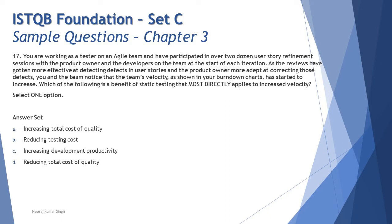Let's take up question number 17. You are working as a tester on an agile team and have participated in over two dozen user story refinement sessions with the product owner and the developers at the start of each iteration. The reviews have gotten more effective at detecting defects in user stories, and the product owner has become more adept at correcting those defects. The team notices that velocity, as shown in burn down charts, has started to increase.